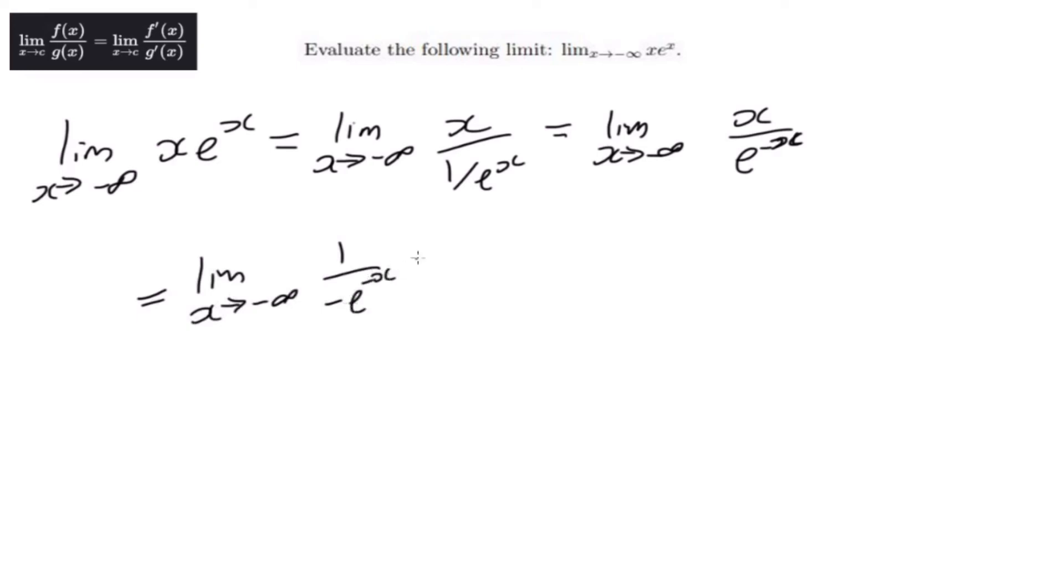And now when we see that when x tends towards negative infinity, it tends towards minus infinity. Minus times minus is positive infinity. E to the infinity is infinity, so 1 over minus infinity equals 0. So that is your limit for this question: the limit of x towards negative infinity of x e to the x.